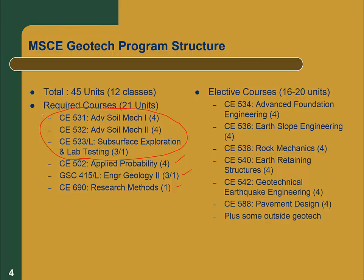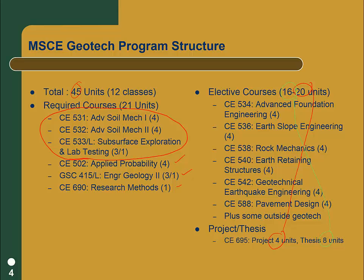In addition to required classes, there are elective courses — all the design courses in the program. You'll be taking either 16 or 20 units of technical electives depending on whether you're doing a project or a thesis. Our program requires a culminating experience — either a project or a thesis. The project is four units, requiring 20 units of technical electives; the thesis is eight units, requiring 16 units of technical electives, both totaling 45 units. The vast majority of our students end up doing a project.